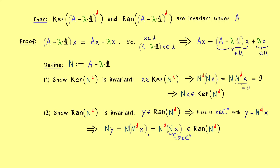In the proof you might have noticed that the power chosen for N was not critical — it also works for different powers, not just the fitting index d. However, the claim for the fitting index is really important, as we will see in the next video, where these invariant subspaces will allow us to decompose our matrix A into Jordan blocks. I hope to see you there — have a nice day, bye bye.